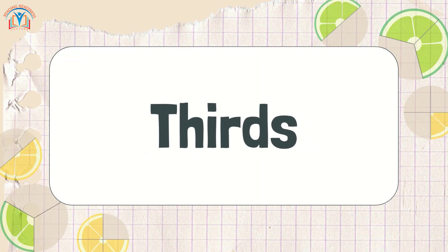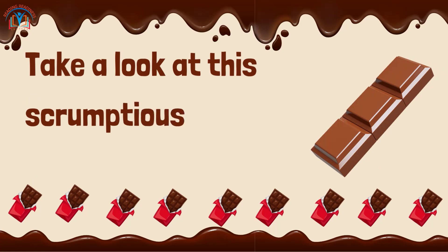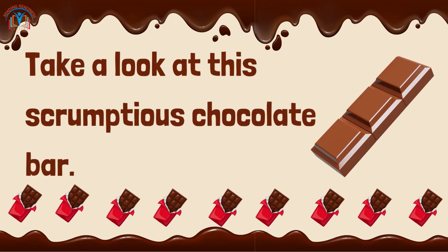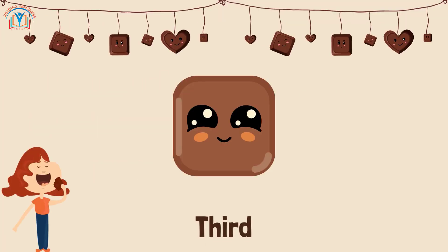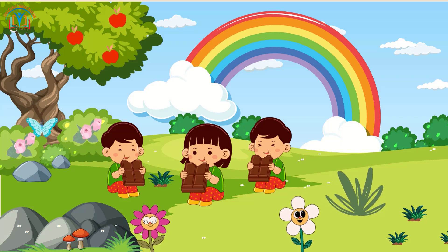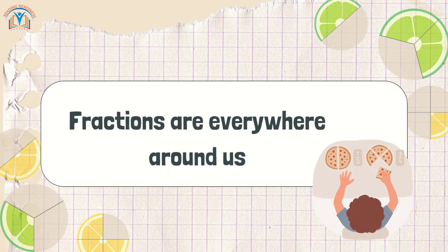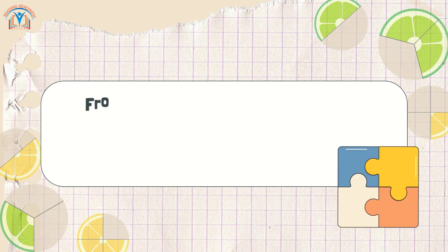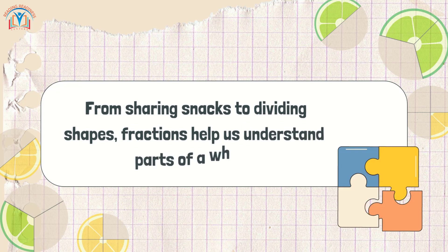Now let's explore thirds. Take a look at this scrumptious chocolate bar. When we split it into three equal parts, each part is called a third. That means we have three thirds. Fractions are everywhere around us — from sharing snacks to dividing shapes.